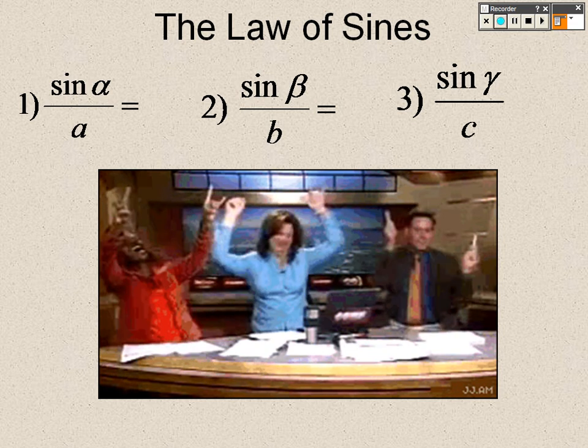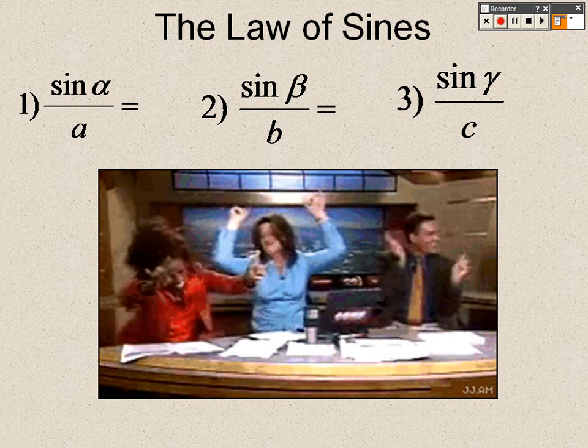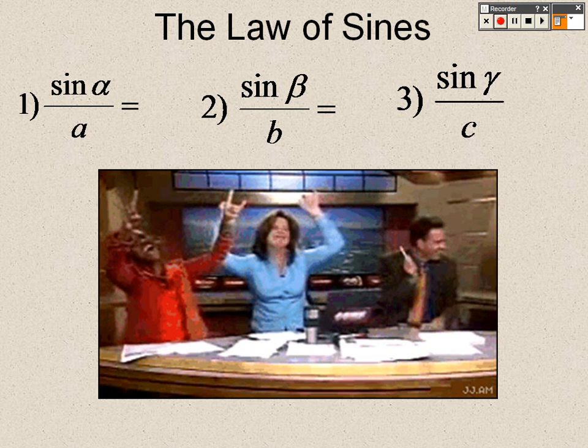And you can just set all three of those equal to each other, or just set pairs equal to each other, and you just cross-multiply to solve, and that is it.